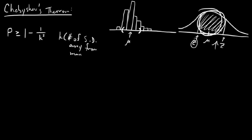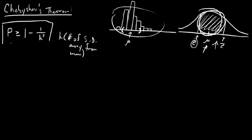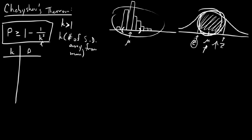This is a convenient way to accomplish what we couldn't do previously with the standard normal distribution when the distribution isn't approximately normal. Let's explore this and look at the pattern that develops. It's important to point out that K is necessarily greater than 1. The reason is that if we substitute one standard deviation away from the mean for K, we'd have 1 minus 1 over 1 squared, which is 1 minus 1 = 0. We want to avoid that. So let's start with two standard deviations away from the mean.